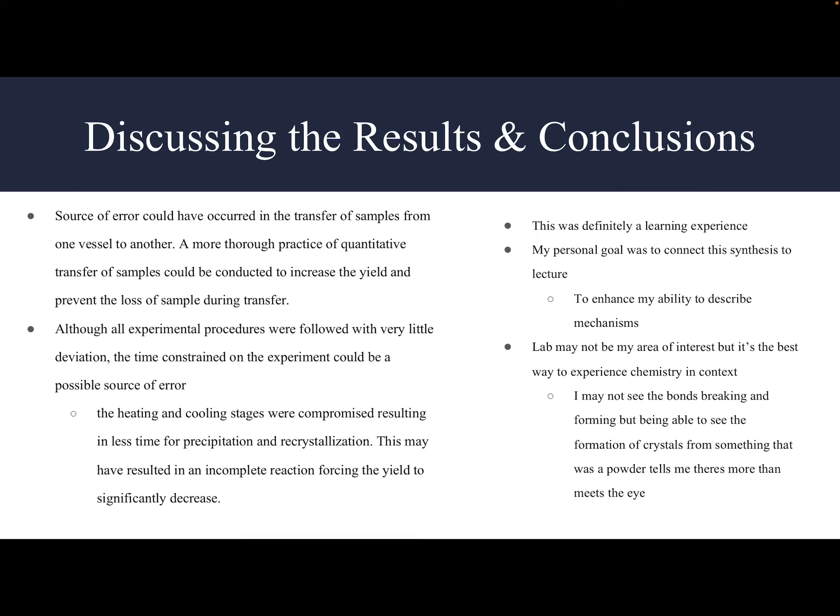Discussing the results and sources of error: I can see why our theoretical yield and observed quantity were so different. One source of error was in the transfer of samples from one vessel to another — there was a lot of moving material onto a watch glass and back into a tube, especially during the recrystallization step, as well as having excess water. To address this, a more thorough practice of quantitative sample transfer could be conducted to increase yield and prevent loss of sample during transferring.